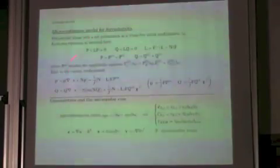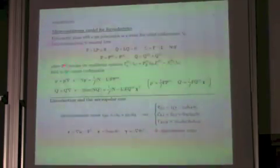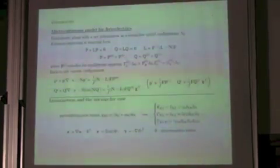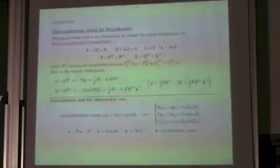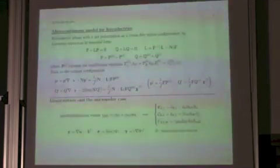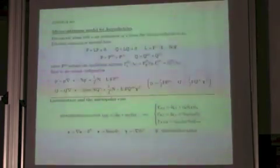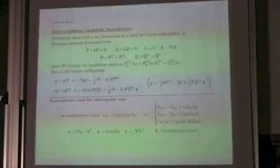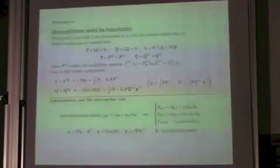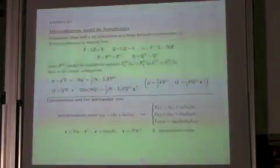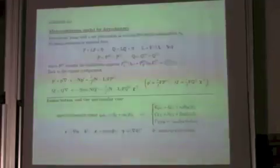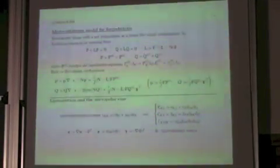We have a net polarization, so we have a vector P0 which describes this polarization in the initial configuration. We consider superimposed fields P1, Q1. The evolution equations in the material form are these, and we go back to the current configuration to obtain the evolution equations in this form. P' is the superimposed incremental field. To obtain a simpler model, we now linearize the model, and in particular consider the micropolar case.